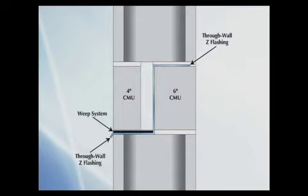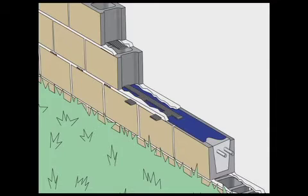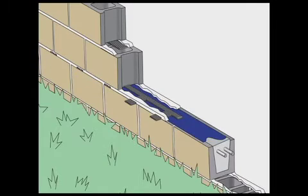Most CMU walls are flashed and weaved using two smaller blocks placed side by side and by using a through-wall Z flashing. The MTI method improves on this design. The slope to drain tool used in conjunction with MTI's cavity weep creates a drainable, sustainable CMU wall system.